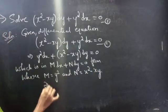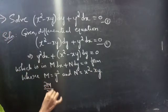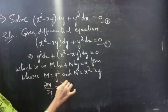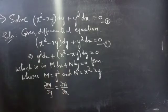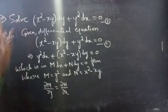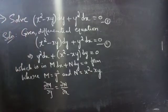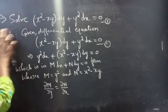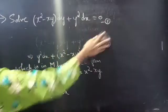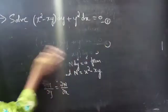If the partial derivative of M with respect to y is equal to the partial derivative of N with respect to x, then we can say that the given differential equation is an exact equation. So now let's find ∂M/∂y and ∂N/∂x.